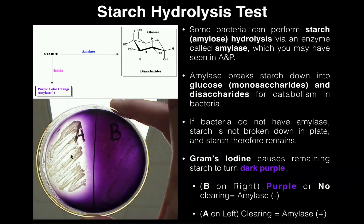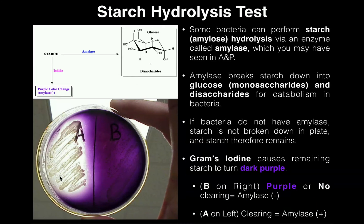In contrast, on the left side, we can clearly see that not all of it is purple. Everywhere around the smear directly, we actually see no purple — we can see a clearing around the smear. If you hold this up to a light, you can actually see directly through the plate. These organisms on the left are amylase positive. If you have an amylase positive organism, that means these organisms have the enzyme amylase — they possess this enzyme. Therefore, they are able to break down starch into the products. And so when you pour the iodine on there, it doesn't stain purple where there's no starch, creating what's called a zone of clearing that will manifest around the smear itself.